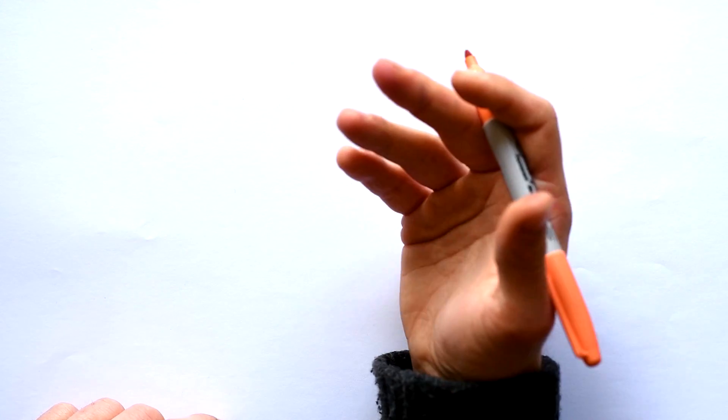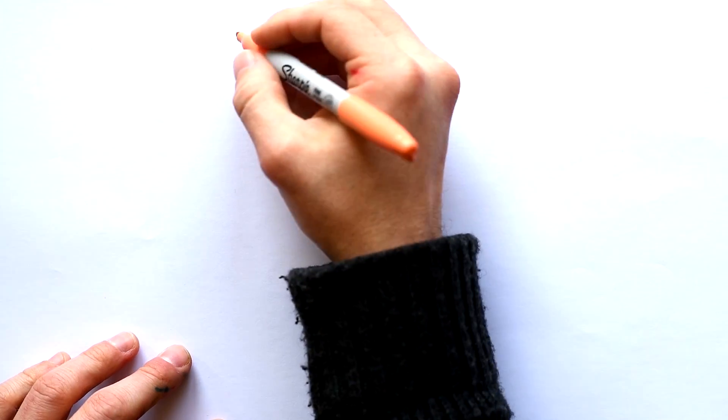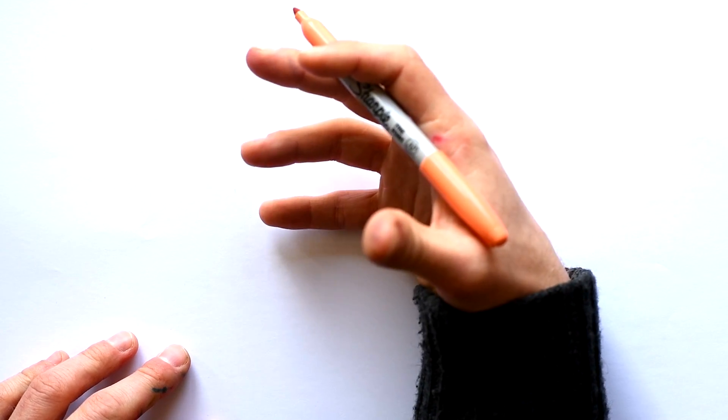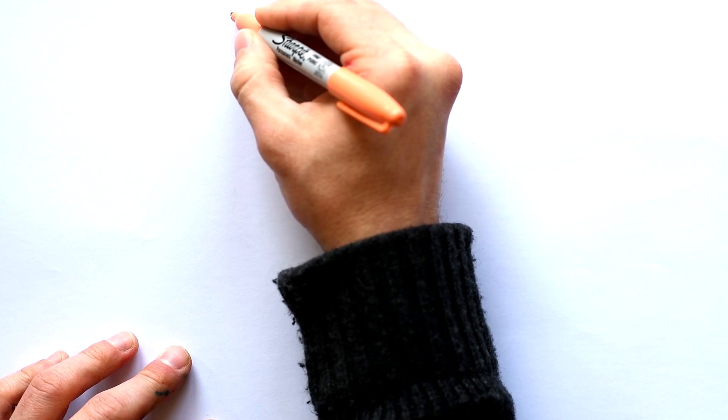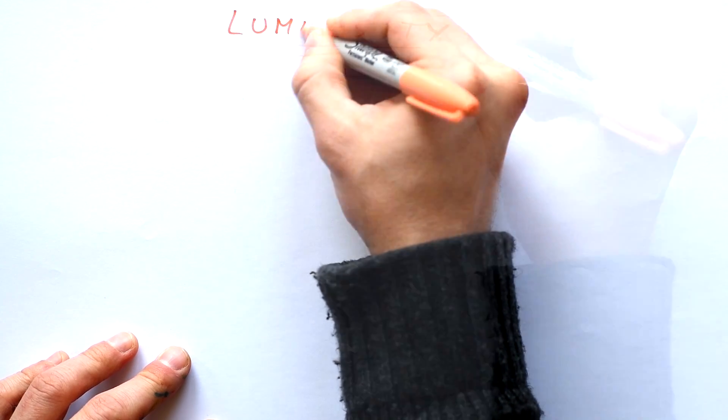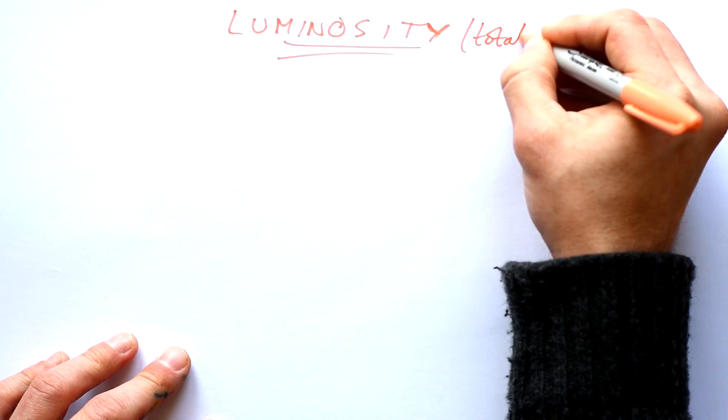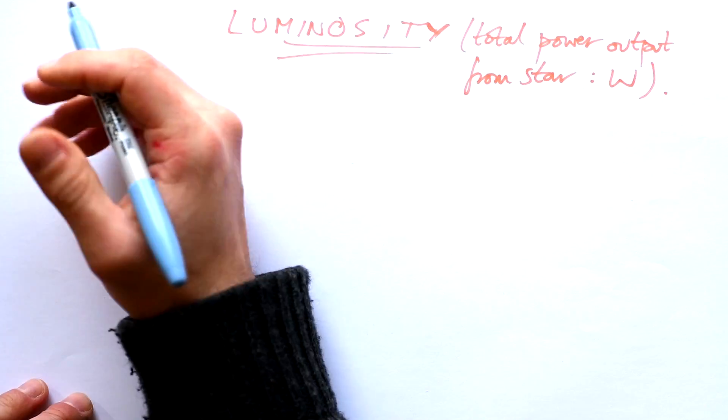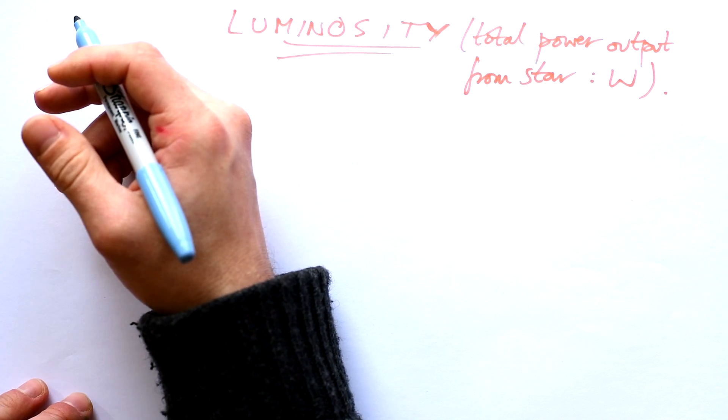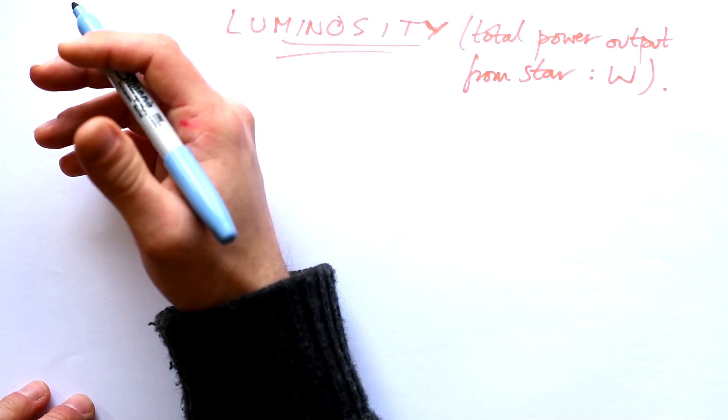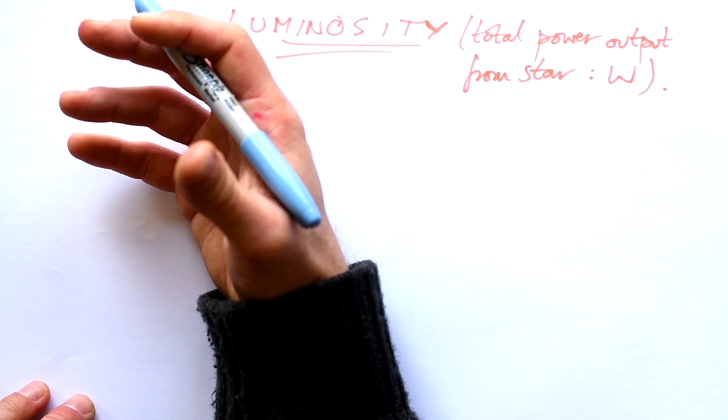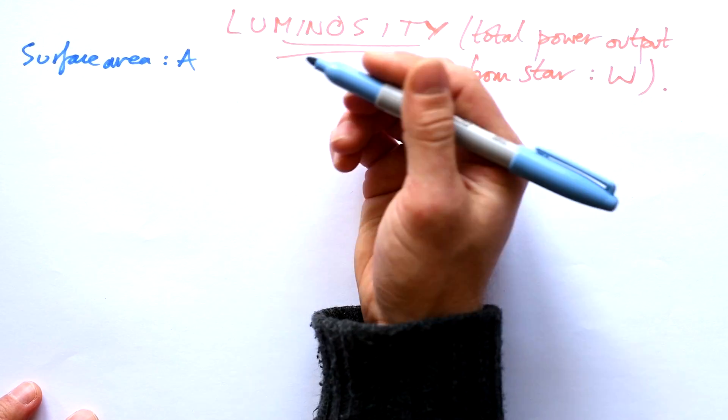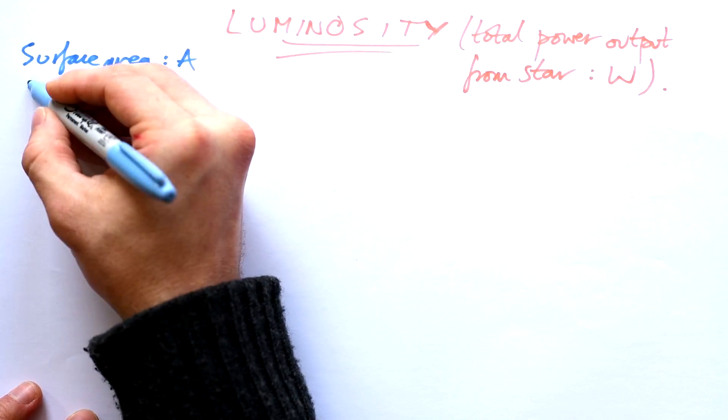Now we've talked about intensity, that's power per unit area, but it would be useful for us to actually know how much power is being dished out by a star altogether. And that is what we call luminosity. That is just total power output from a star, and so that's going to be in watts. Now, of course, there's two things that can affect how bright a star is, how much power is being dished out. And those are the surface area, the bigger the star is, the bigger surface area it has, so the more radiation it can dish out, and also temperature.